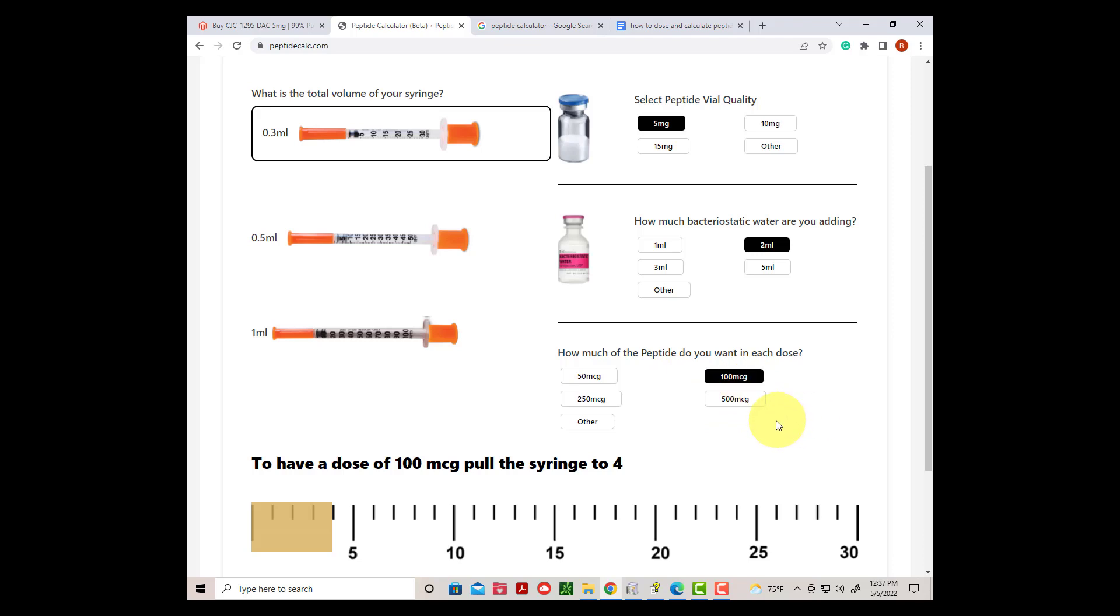Once we have done this we can look down at the bottom of the page and determine how much water to pull into the syringe. In this case we see four ticks on the needle. Each one of these little hash marks here are referred to as ticks.